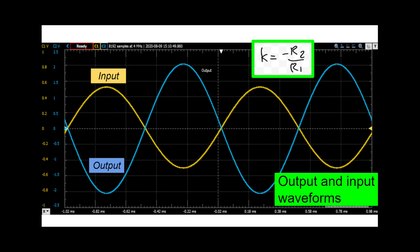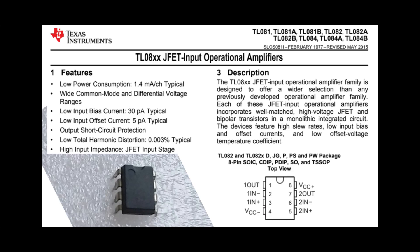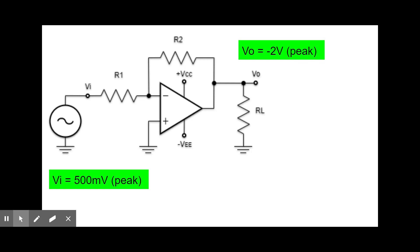It's time to play with what we just learned. The challenge now is to design an inverting amplifier that will take in a 500 millivolt signal and produce negative 2 volts at the output. The frequency is 1000 Hz, and the load is 2k. We'll assume here that the voltages are peak levels. There are hundreds of op-amps available in the market, but for today, we will use the TL082 from Texas Instruments. This IC has two op-amps inside it, but we will use only one for now. Since Vo reaches positive/negative 2 volts, our op-amp should be powered with enough headroom, so let us choose VCC equals positive 5 volts and VEE equals negative 5 volts.